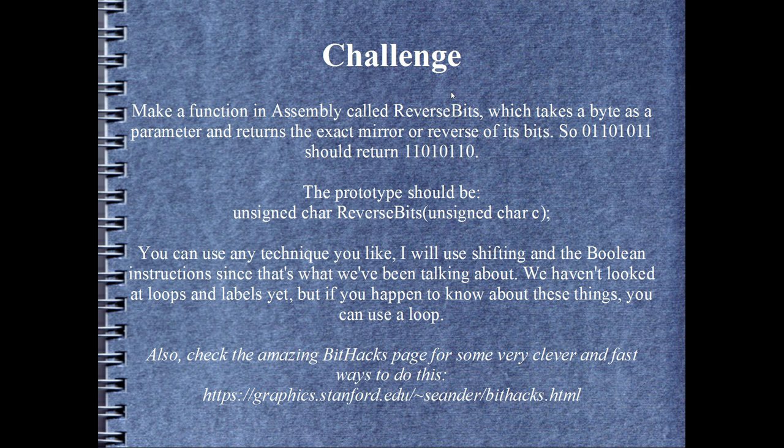Alright, this is harder than it sounds, if you've not done it before. But I want you to make a function in assembly called reverse bits, only if you've got time. I mean, there's no pressure here. It's got to take a byte as a parameter, or an unsigned char, in other words, in C++ speak. It's got to return the exact mirror, or reverse, of the bits. So 0, 1, 1, 0, 1, 0, 1, 1 should come out 1, 1, 0, 1, 0, 1, 1, 0. Exactly the mirror, or reverse. This is the prototype just here. And you can use any technique that you like. I'm going to be using shifting in the Boolean instructions, just because that's what we've been talking about. But if you know about loops and labels, then you can use some of that. It might help you out. If you're really interested in some very clever ways to do exactly this, you might want to check out the Bithacks page. There's just beautiful tricks there. Much, much cleverer than what I'm about to do. And the next slide is a hint. So if you don't want the hint, you might want to skip it.